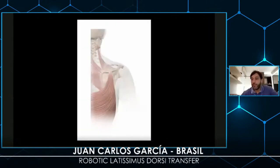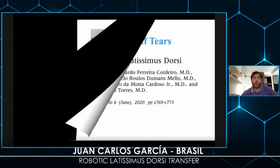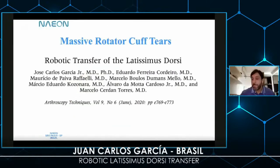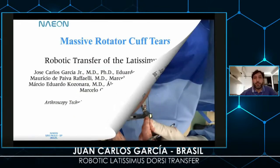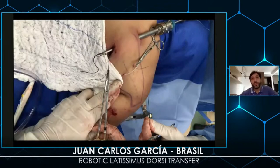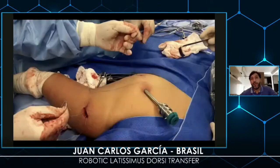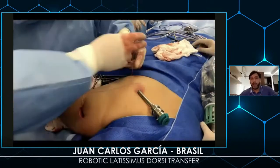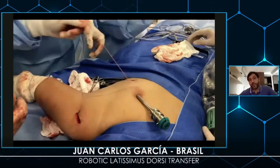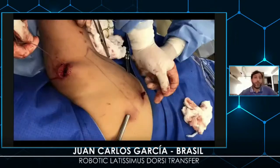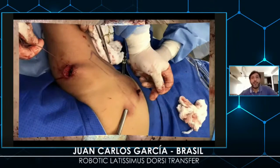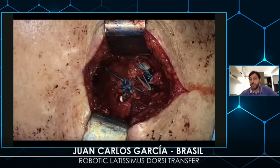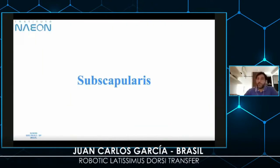There are other applications — used for massive rotator cuff tears. The first part, dissecting the latissimus dorsi, is the same, but you use wires to pass subcutaneously to the rotator cuff, to the deltoid approach. And finally for the subscapularis — I think this is one of the best applications we have done.